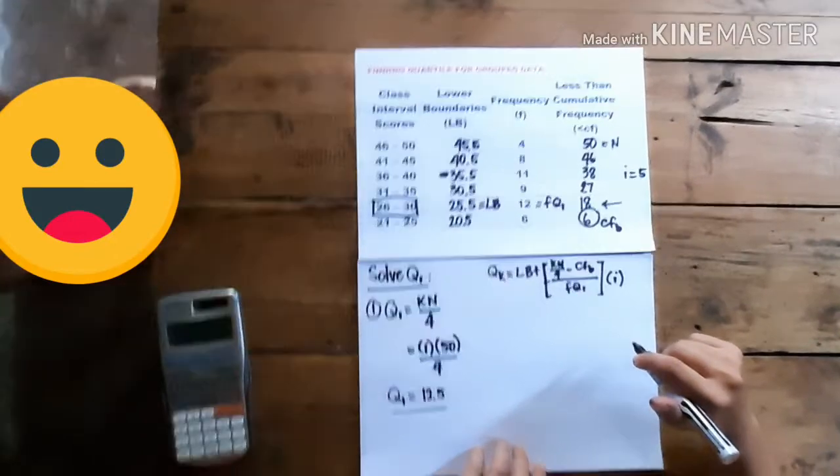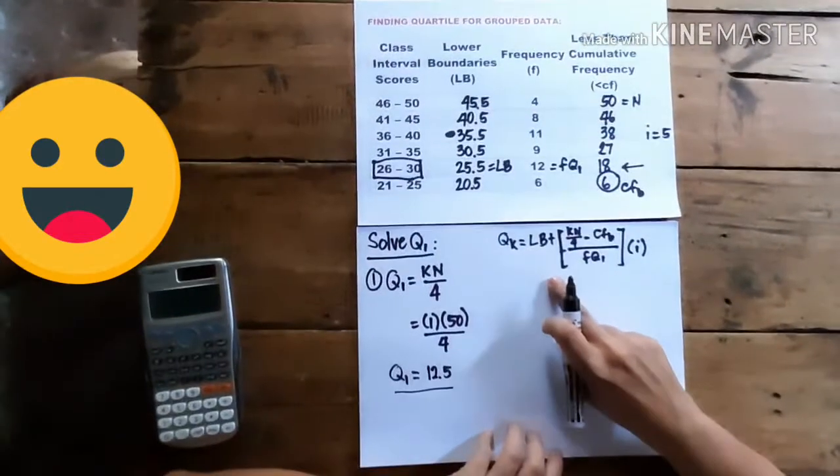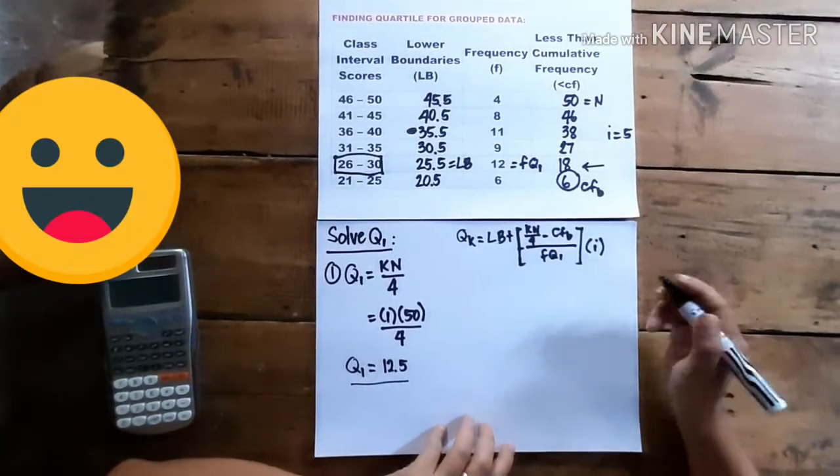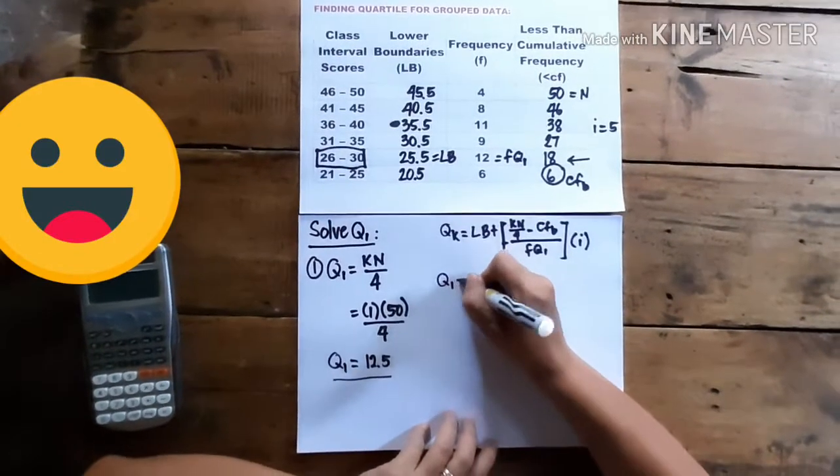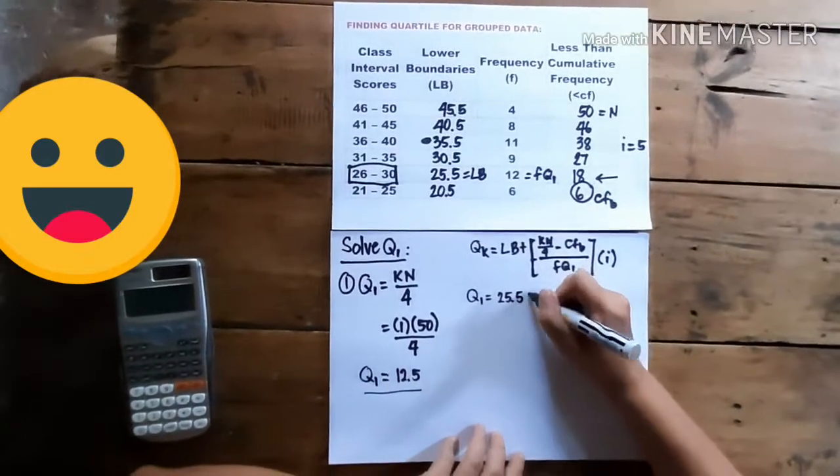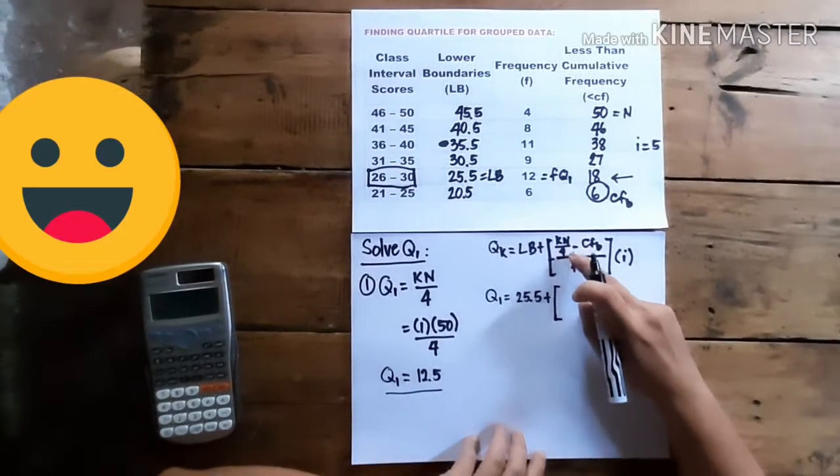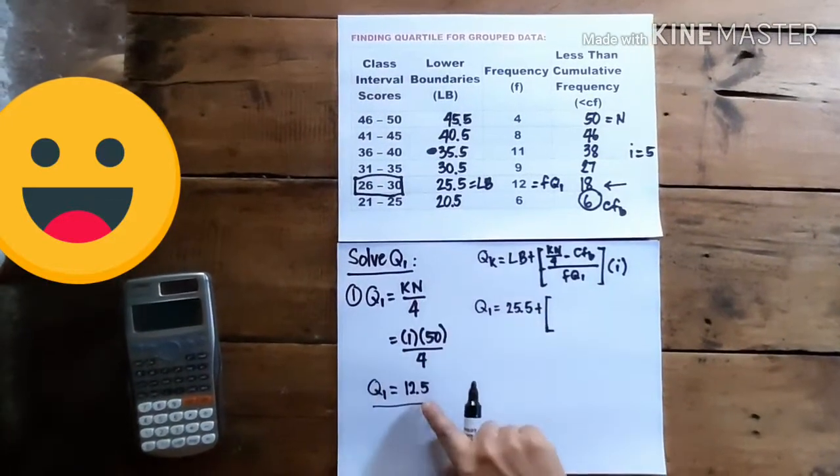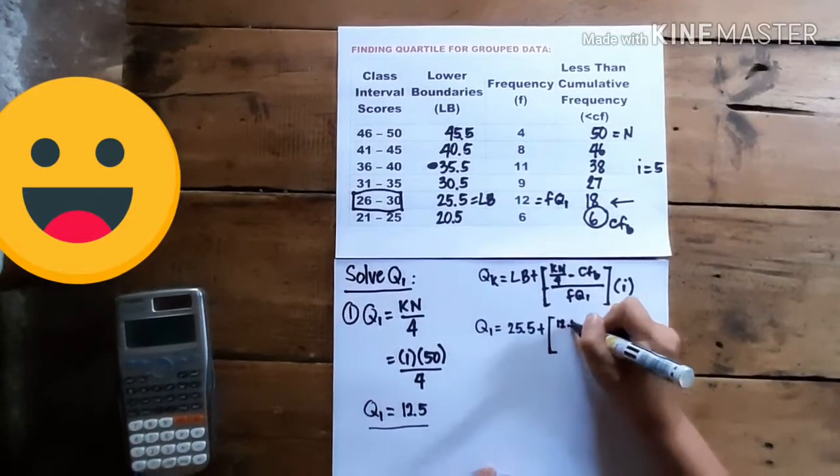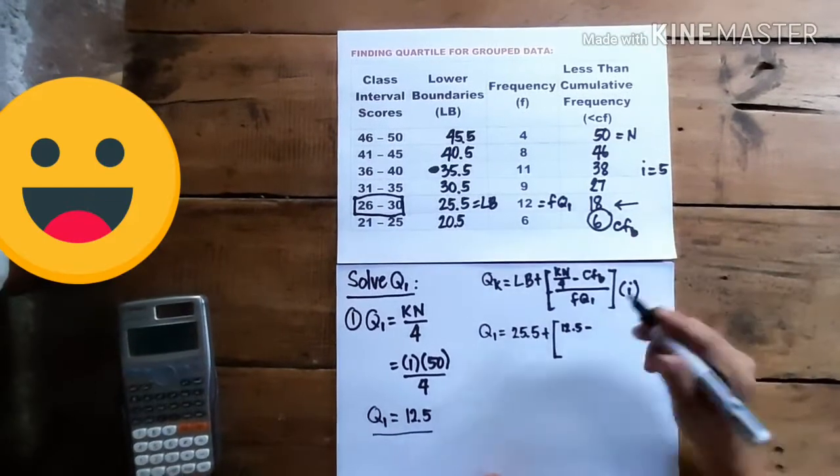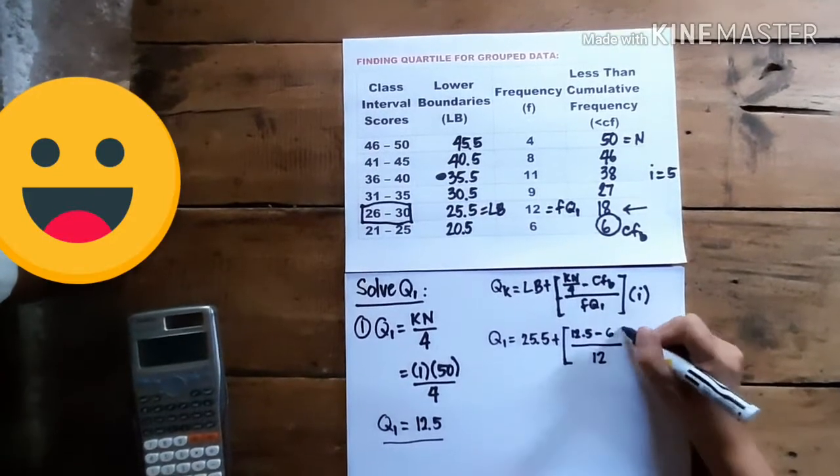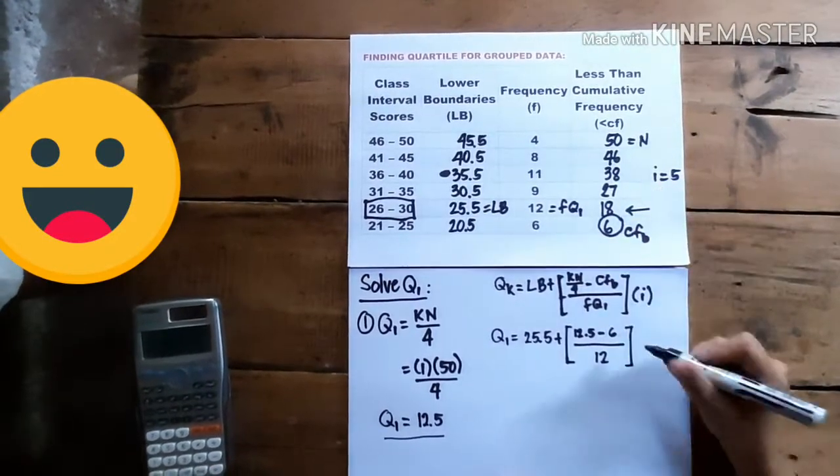Okay, now, using this formula, after locating each term, we just substitute. So that means to get quartile 1, our lower boundary is 25.5 plus, our KN divided by 4 is, we can see it here. So that means the KN divided by 4 is 12.5. And then, subtract our CFB, which is 6, and divide by the frequency of quartile 1, which is 12, and times our class interval, which is 5.